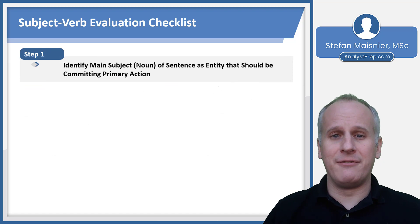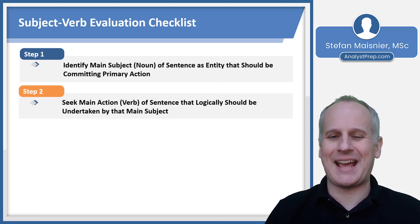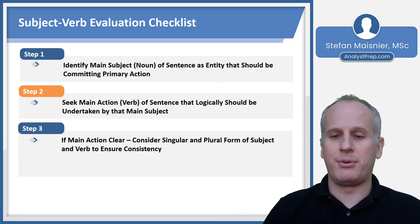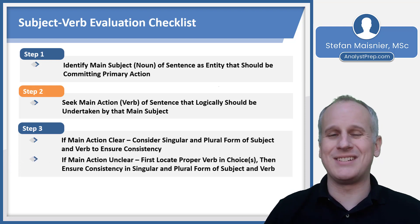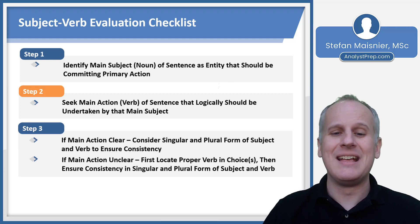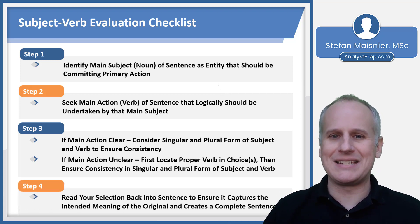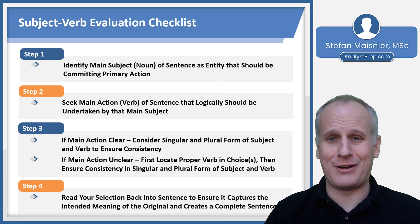Let's talk about evaluating subject-verb agreement step by step. Step one: identify the main subject as the entity that should be committing the primary action. Step two: seek the main verb that logically should be undertaken by that subject. If the main action is clear, immediately consider singular and plural forms of the subject and verb to ensure consistency. If the main action is unclear, first locate the proper verb in the choices, then consider number. Step four: read your selection back into the sentence to ensure it captures the intended meaning and creates a complete sentence.